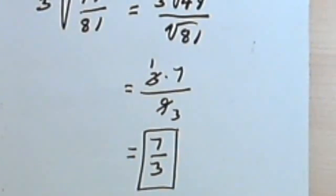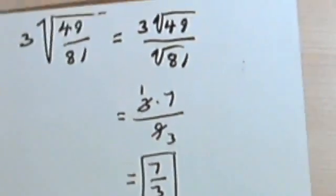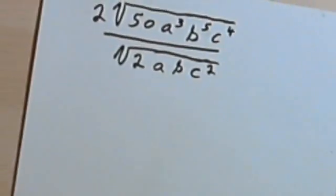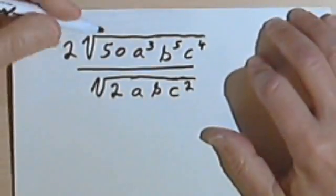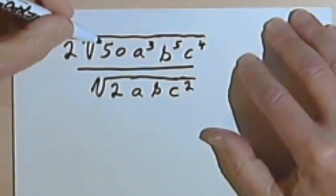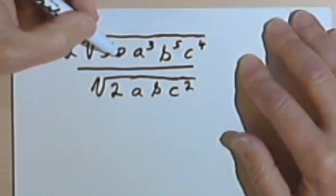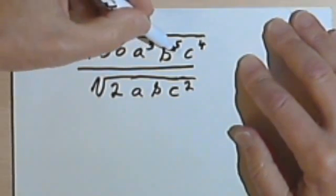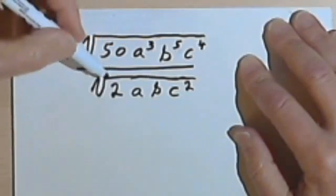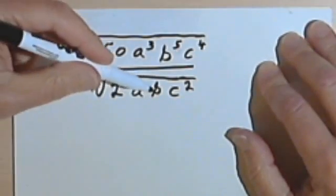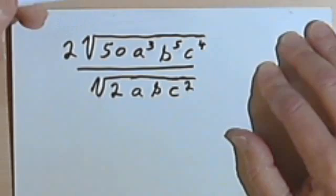Okay, and this also works for variables. So let's do a problem with some variables in it. Here I've got 2 times the square root of 50a to the 3rd, b to the 5th, c to the 4th, all of that over the square root of 2abc squared.